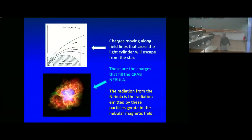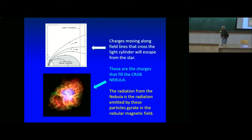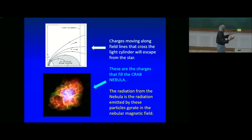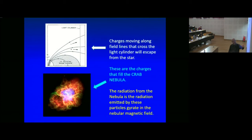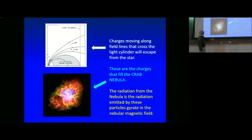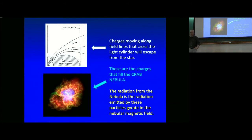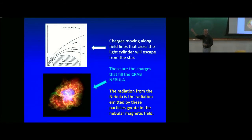It was a long mystery trying to explain the polarized radiation from the Crab Nebula, which Klovsky had predicted would be strongly polarized. That was resolved when the pulsar at the center of the Crab Nebula was discovered. What is responsible for the radiation from radio to high-energy gamma rays is these ultra-relativistic particles escaping from the neutron star.